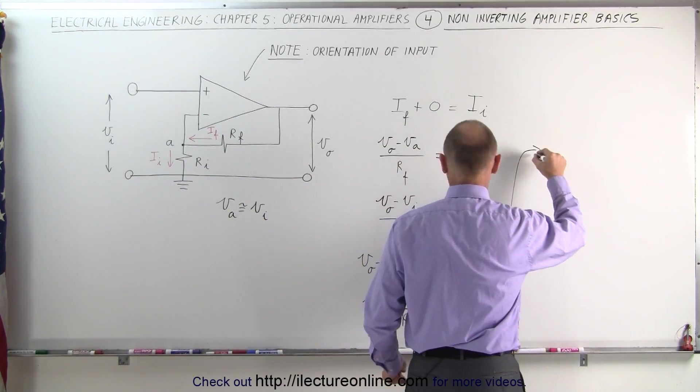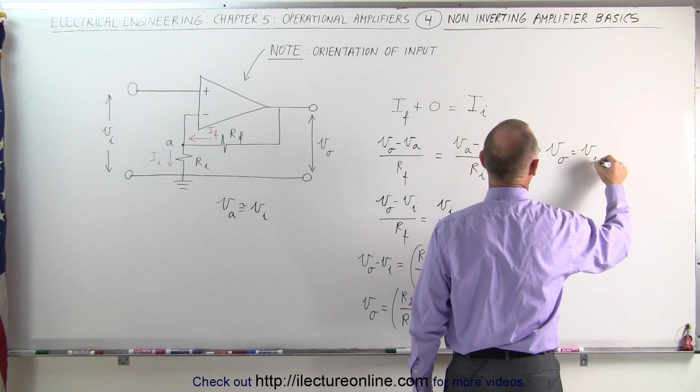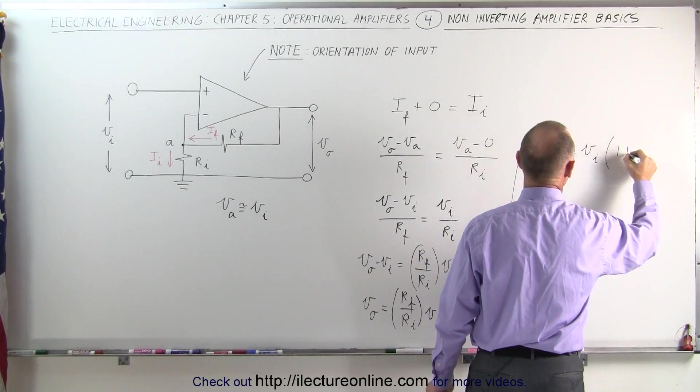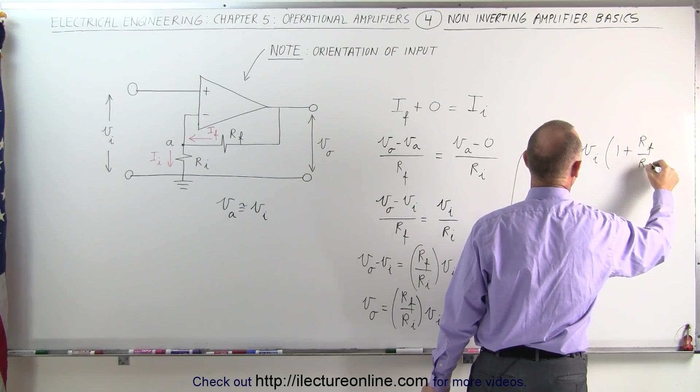And that means I can write my equation as follows: the output voltage is equal to the input voltage times the quantity of one plus the gain factor which is R sub F over R sub I.